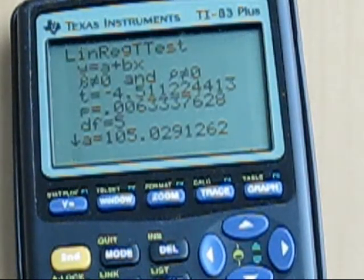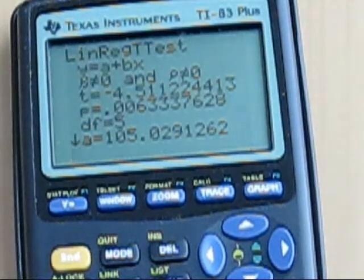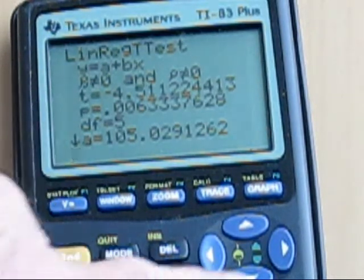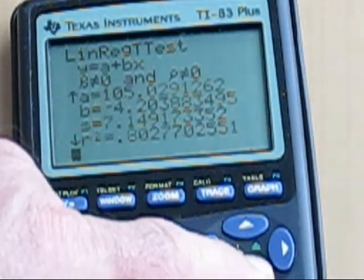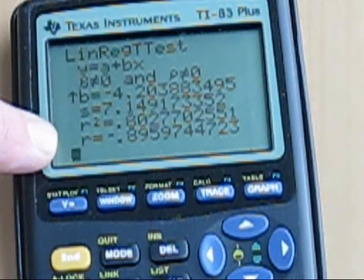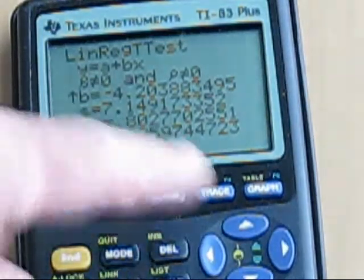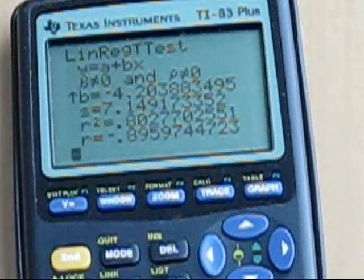And I pressed enter, it took a moment to do the calculations, and then it comes up with a lot of information, most of which we don't need. Let's scroll down. Notice a down arrow key means there's more information below, so we scroll down and at the bottom we find r equal. That r equal is exactly what we're after, the Pearson product moment correlation coefficient. The Pearson r is equal to 0.8959744723. We like to have two decimal places so we'll call this 0.89. 0.8959, we should round up to 0.90.